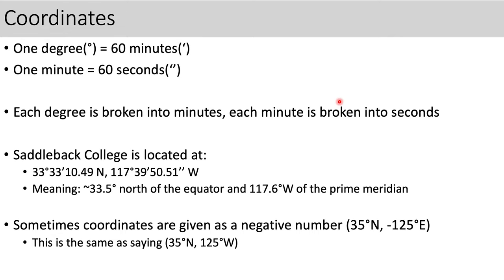Coordinates are reported in degrees of that 360-degree circle of our globe. Each degree contains 60 minutes, and each minute contains 60 seconds — similar to how we think about time. When you want to be more specific than just degrees, you report in minutes and seconds. For example, our classroom at Saddleback College — which I located precisely using Google Earth — is at 33 degrees, 33 minutes, and 10.49 seconds north latitude.